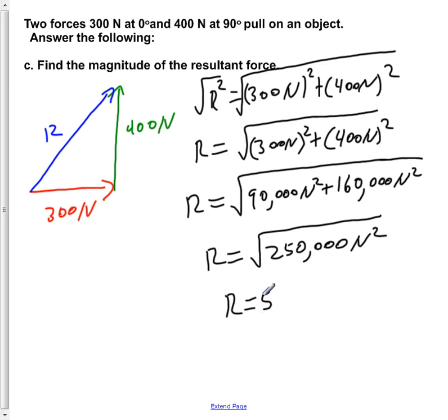Now take the square root of that. We find that R is equal to 500 N. So here we have just calculated the magnitude of R to be 500 N.